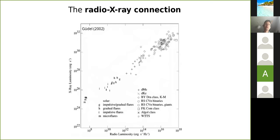There's also a connection between radio emission and X-ray emission. I'll show the so-called Gudel-Benz relation — an empirical relation between the X-ray luminosity of a star and broadly speaking the non-thermal radio luminosity of a star. This was originally constructed by putting all kinds of radio and X-ray observations on a plot and realizing there was an empirical correlation over many orders of magnitude. This is not really fully explained, but there's definitely interesting physical information in here and it really shows an underlying connection between the two.